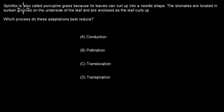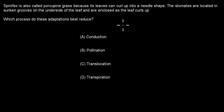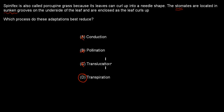Next: Spinifex, also called porcupine grass, has leaves that can curl up into a needle shape. The stomates are located in sunken grooves on the underside of the leaf and are enclosed as the leaf curls up. Which process do these adaptations best reduce? A: conduction, B: pollination, C: translocation, D: transpiration. The correct answer is D, transpiration. By curling up its leaves, Spinifex hides the stomates in sunken grooves, reducing water loss through evaporation, which in plants we call transpiration.